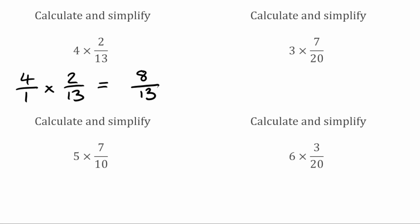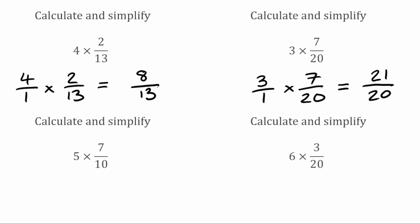For this next question, we're going to write 3 as 3 over 1 multiplied by 7 over 20. Again, looking to see if we can cross-cancel these numbers — we haven't got a highest common factor greater than 1, so we're going to leave them as they are. Multiplying these fractions through, we have 3 multiplied by 7 which is 21, and then on the bottom 1 times 20 which stays as 20. So our answer to this one would be 21 over 20.